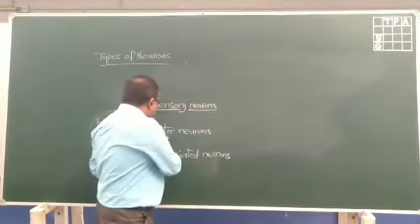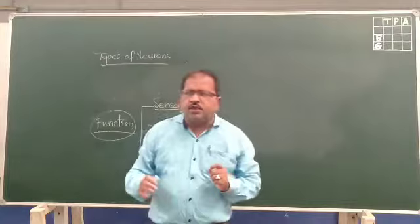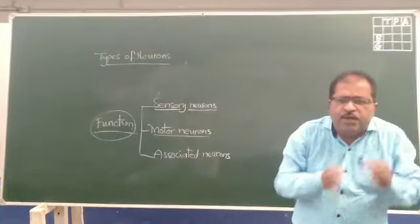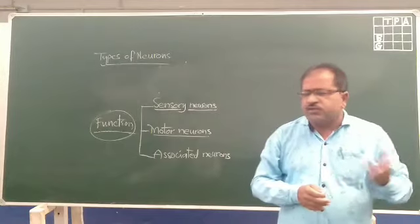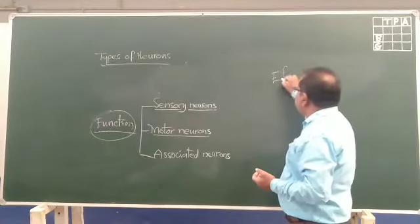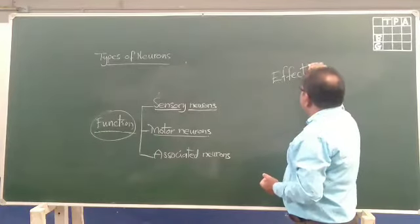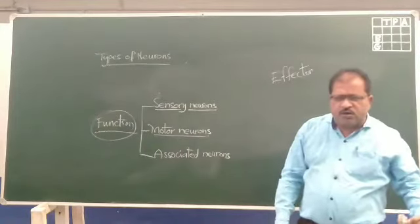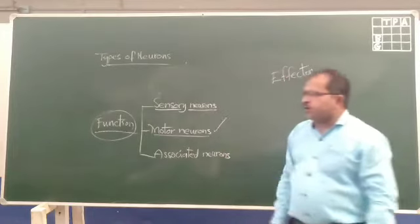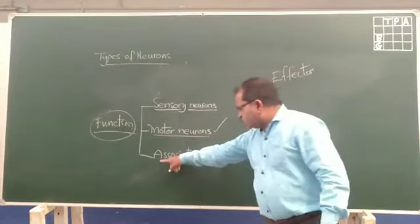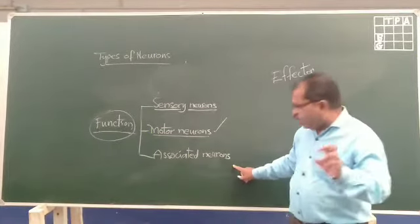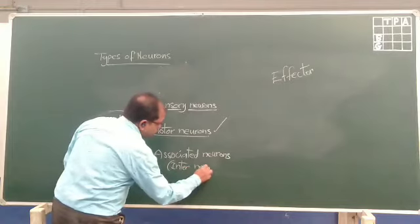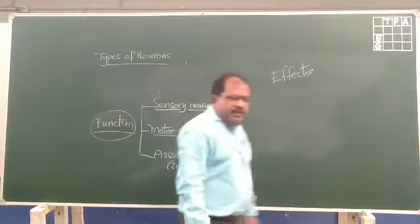Motor neurons carry information from the brain to a particular body part — it may be a muscle or a body organ, called the effector. A body organ which receives information from the brain is the effector, and this information is brought to the effector from the brain by motor neurons. Associated neurons are also called interneurons.